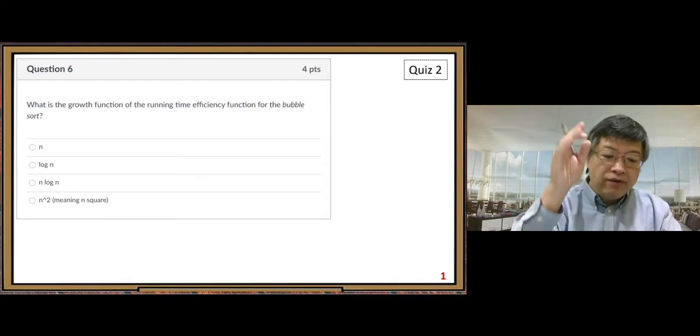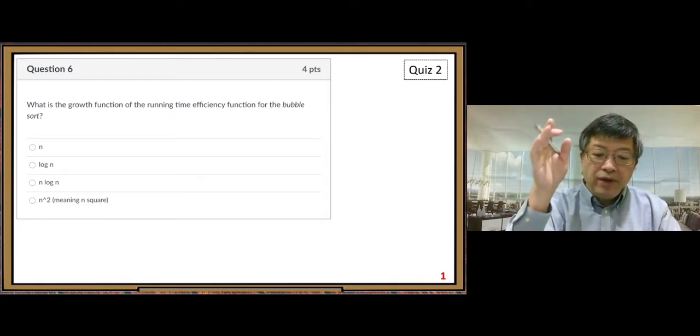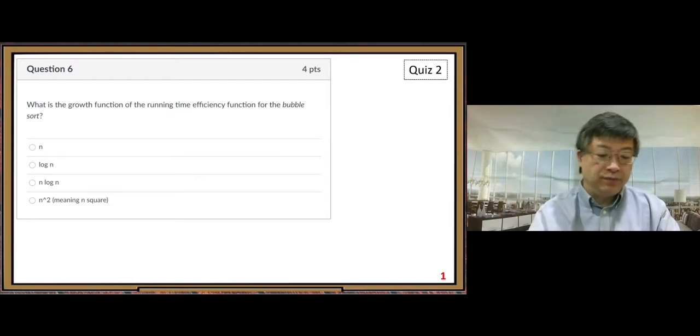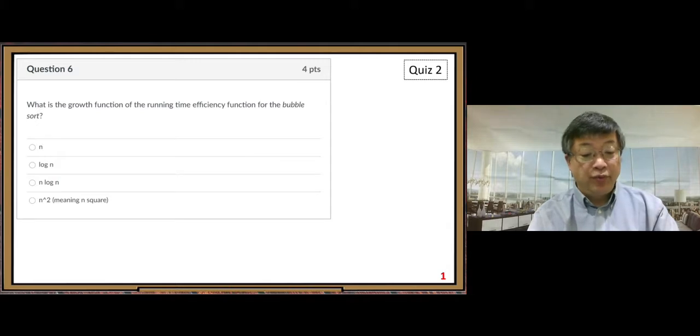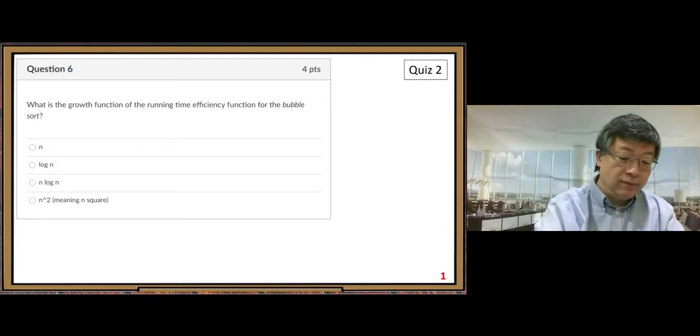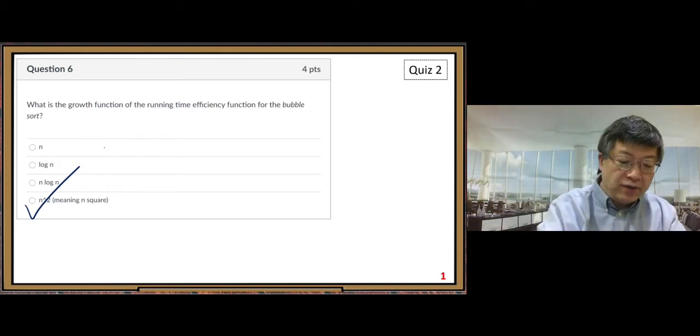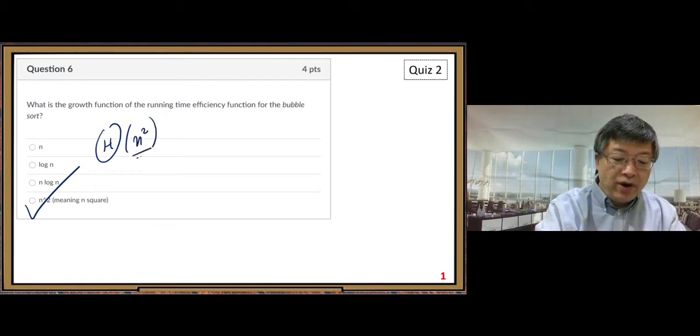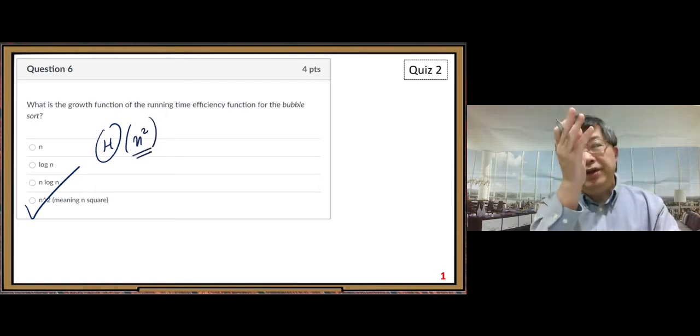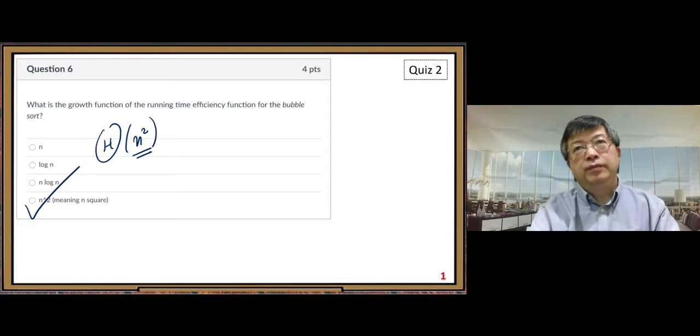First, question number 6. What is the growth function of the running time efficiency of the bubble sort? Pretty simple. The last one, n squared. Big theta of n squared. So we know that the running function will only write the simplest form, n squared.